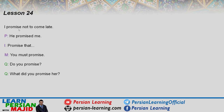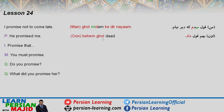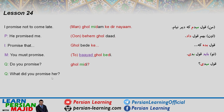Now the first compound verb from DADAN: GOL DADAN, meaning 'to promise'. 'I promise not to come late' — GOL MIDAM KE DIR NAYAM. In this structure, the second verb takes BE or NEH for negative. 'He promised me' — BEHEM GOL DAD. 'Promise that...' — GOL BEDE KE. 'You must promise' — BAYAD GOL BEDE. 'Do you promise?' — GOL MEDE? 'What did you promise her?' — CHI BEHESH GOL DADI?